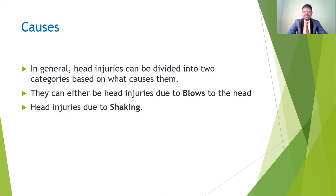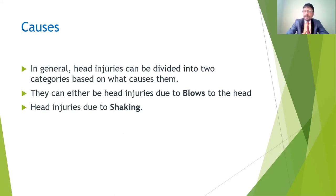Coming to the causes of head injuries — there are many causes, but the main distinction is between direct head injury and indirect injury. Head injuries can be divided into two categories based on cause: a direct blow to the head, or secondary complications. Head injury can also result from shaking — any abnormal movement of the head can cause head injury complications.